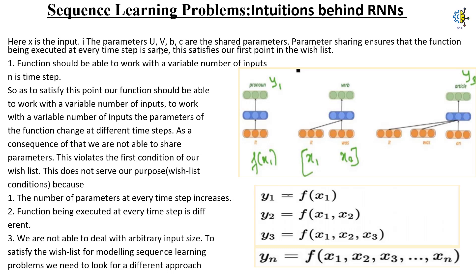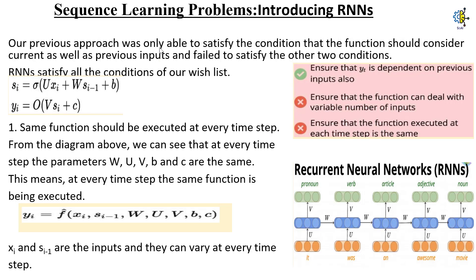For the second wishlist condition — the function should be able to work with a variable number of inputs — if the parameters of the function change at different time steps to accommodate variable inputs, we are not able to share parameters. This violates the first condition of our wishlist, because the number of parameters at every time step increases, the function being executed at every time step is different, and we are not able to deal with arbitrary input size. To satisfy the wishlist for modeling sequence learning problems, we need to look for a different approach. Our previous approach was only able to satisfy the condition that the function should consider current as well as previous inputs and failed to satisfy the other two conditions.